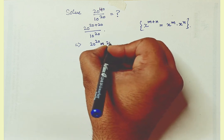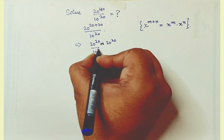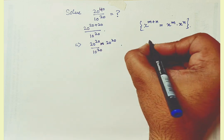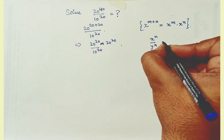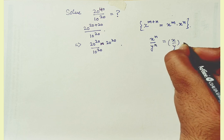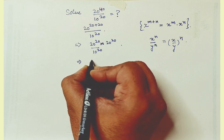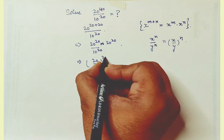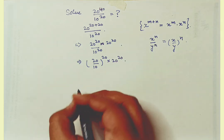So we get 20 raised to power 20, into 20 raised to power 20, upon 10 raised to power 20. Now using the rule x raised to power n upon y raised to power n equals x upon y whole raised to power n, we can write it as 20 by 10 raised to power 20, into 20 raised to power 20.